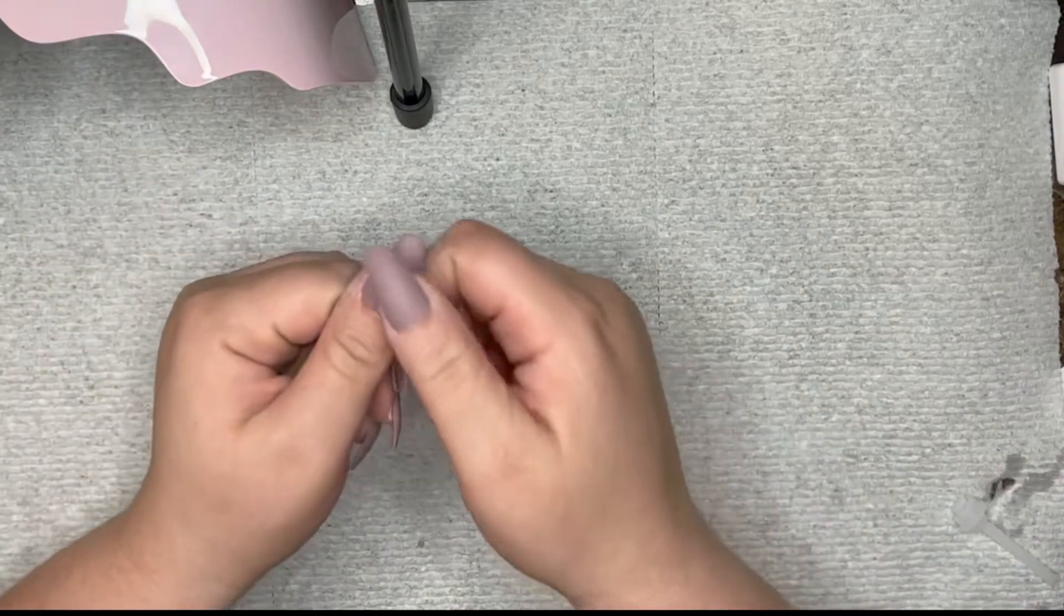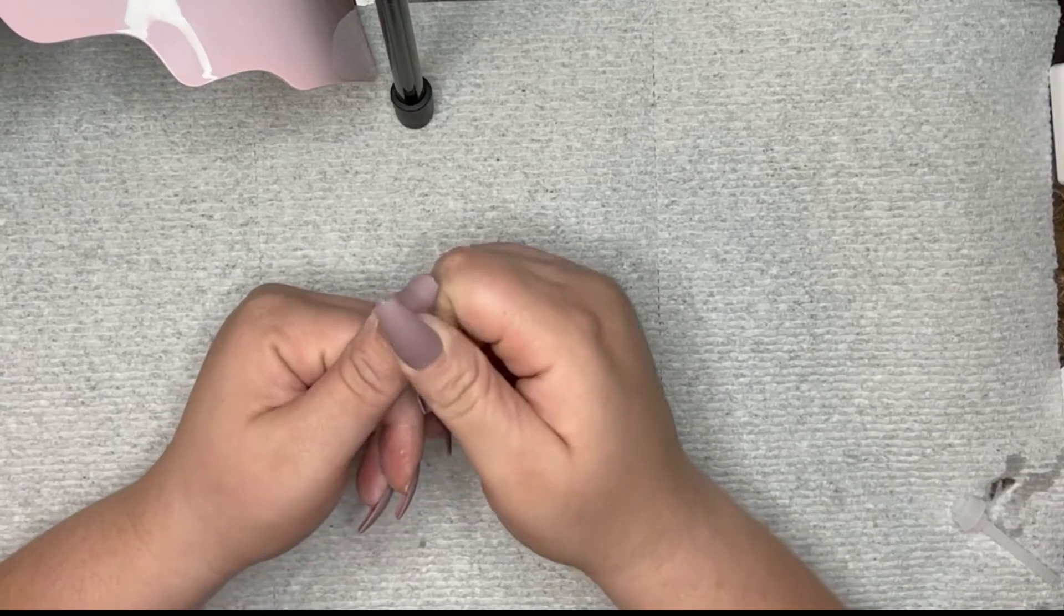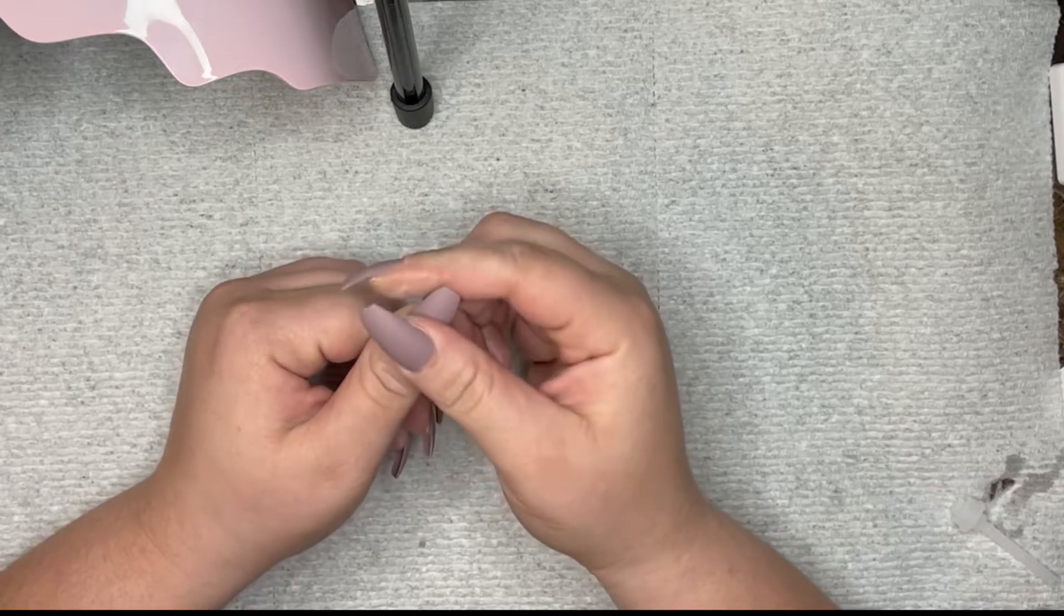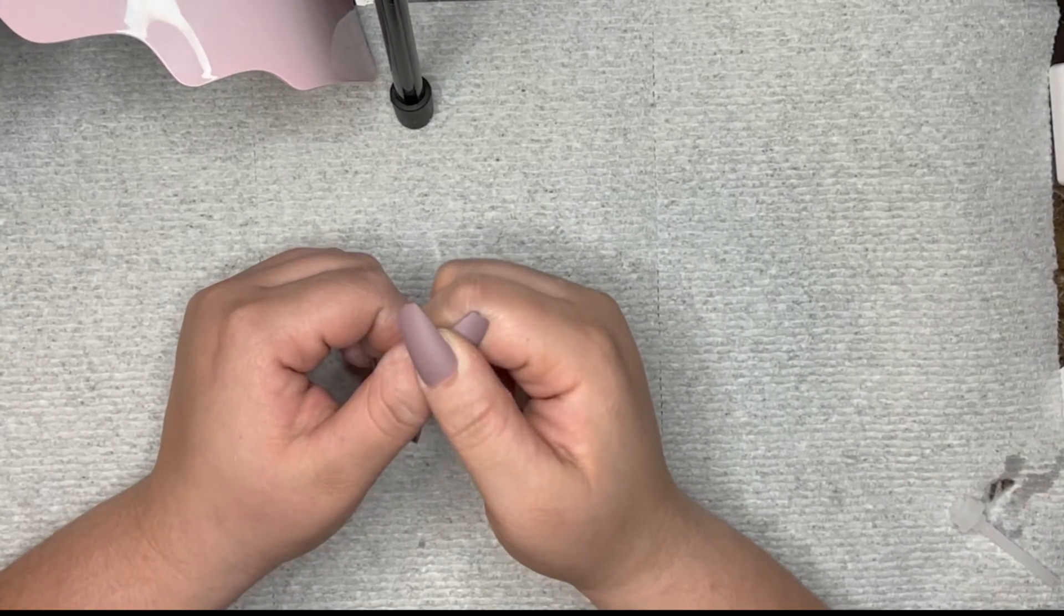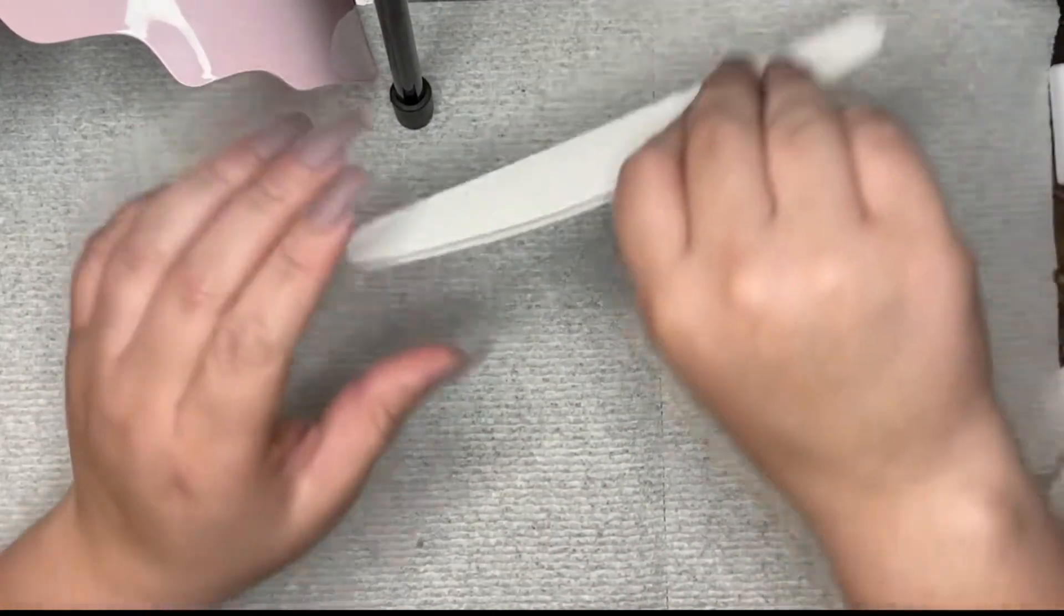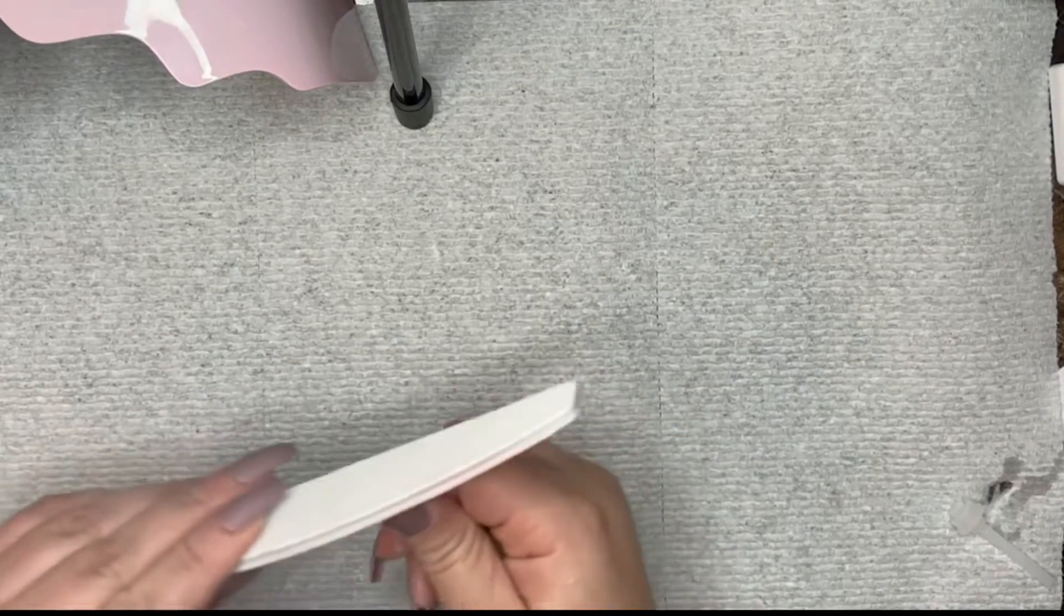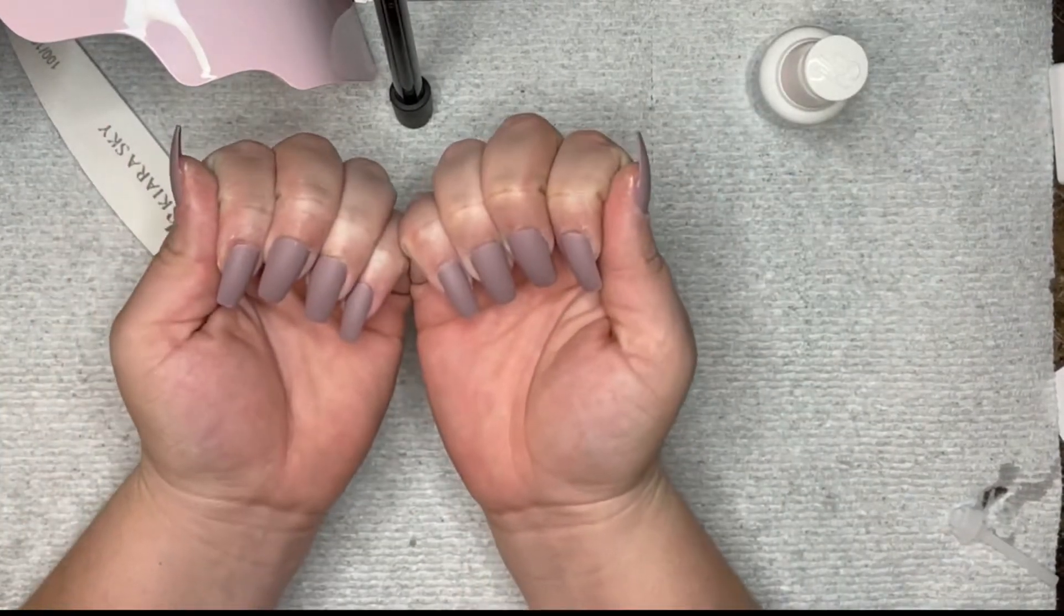So once you do that and you put all your tips on, you want to file and shape and cut down to your liking. I did that just to get the top of the plastic tips, you know, that little number and stuff that's at the top or at the end of the tip. I did that to take that down, make sure that the tapering was all even, and that I didn't have any glue on the side.